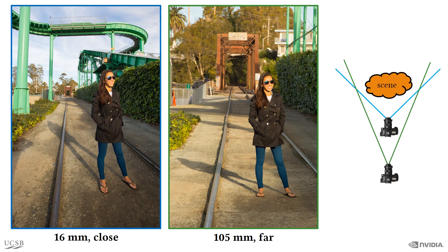Traditionally, the photographer needs to mentally visualize the desired picture, select the capture parameters to produce it, and finally take the photograph, thus committing to a particular composition which cannot be changed later on. Furthermore, the range of compositions are limited to what is possible to capture using a physical camera. Hence, it is impossible to capture a large portion of the background and an undistorted foreground in the same image.